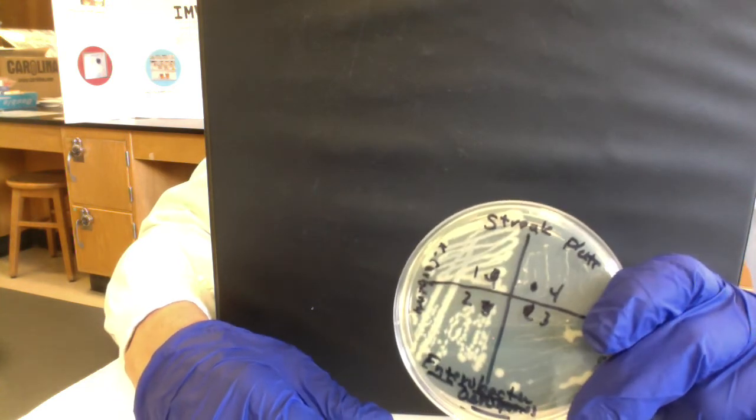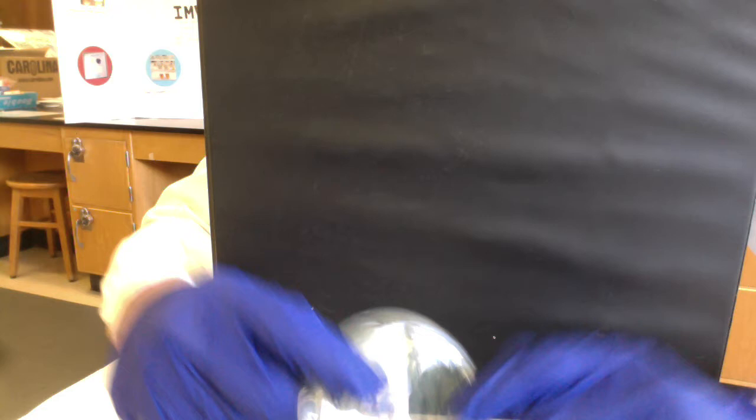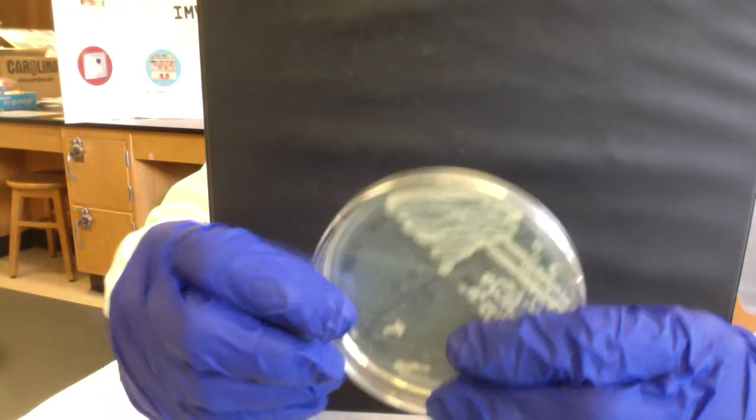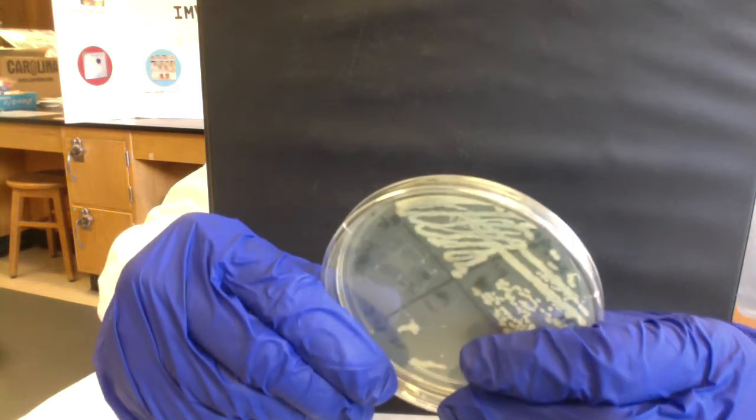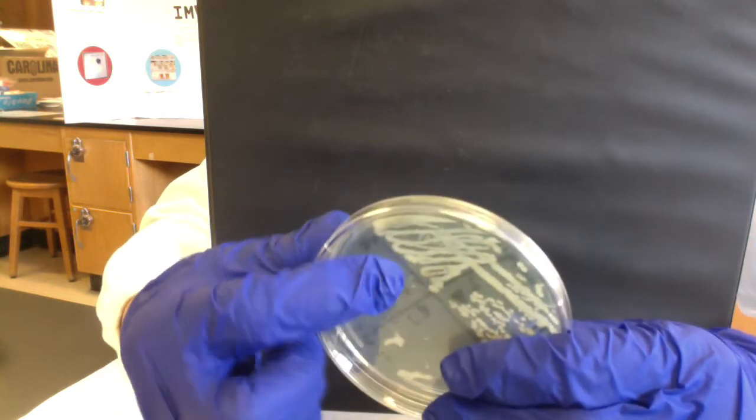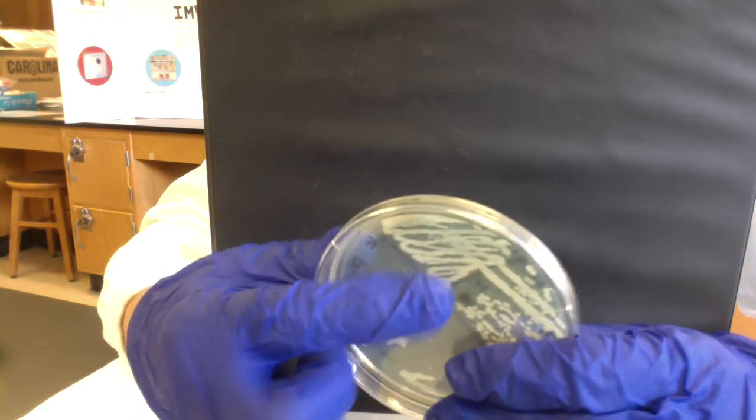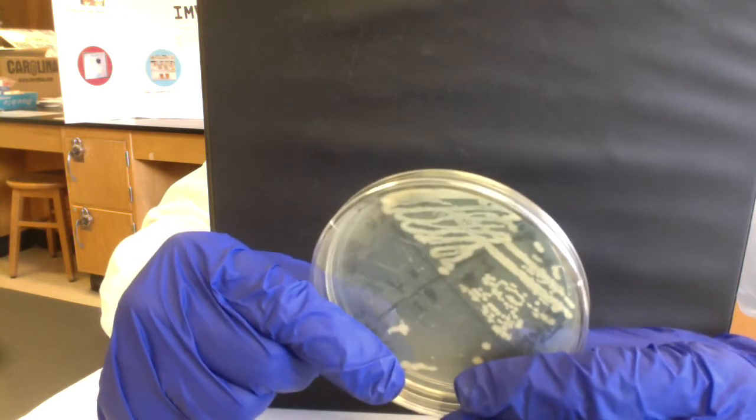When we streaked our plate, we used the four-quadrant technique. We took one loopful of broth and spread it over the surface of quadrant one. You can see there were so many bacteria present that when they grew, the colonies are touching one another, so this isn't isolated.